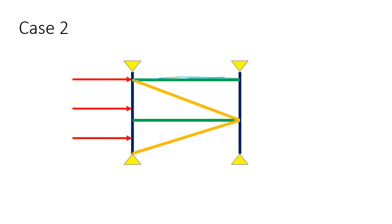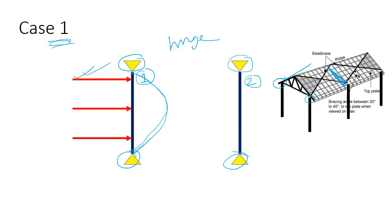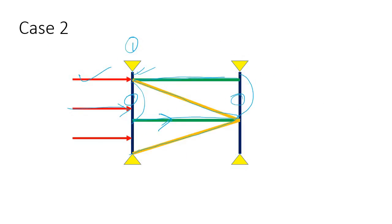Now let's say you have put some longitudinal struts and bracing. The lateral load transfers through the bracing, and Rafter 2 is also affected since it is connected through the longitudinal strut. The effective length is reduced from L to L/2, so the section requirement for Rafter 1 is less compared to Case 1.